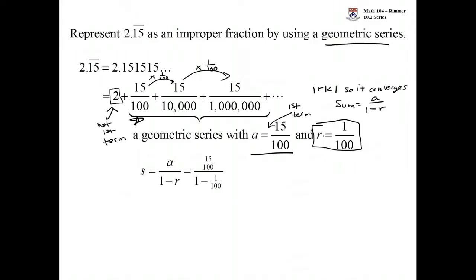We divide that by 1 minus the ratio, which is 1 minus 1 over 100. Well that just becomes 15 over 100 over 99 over 100.